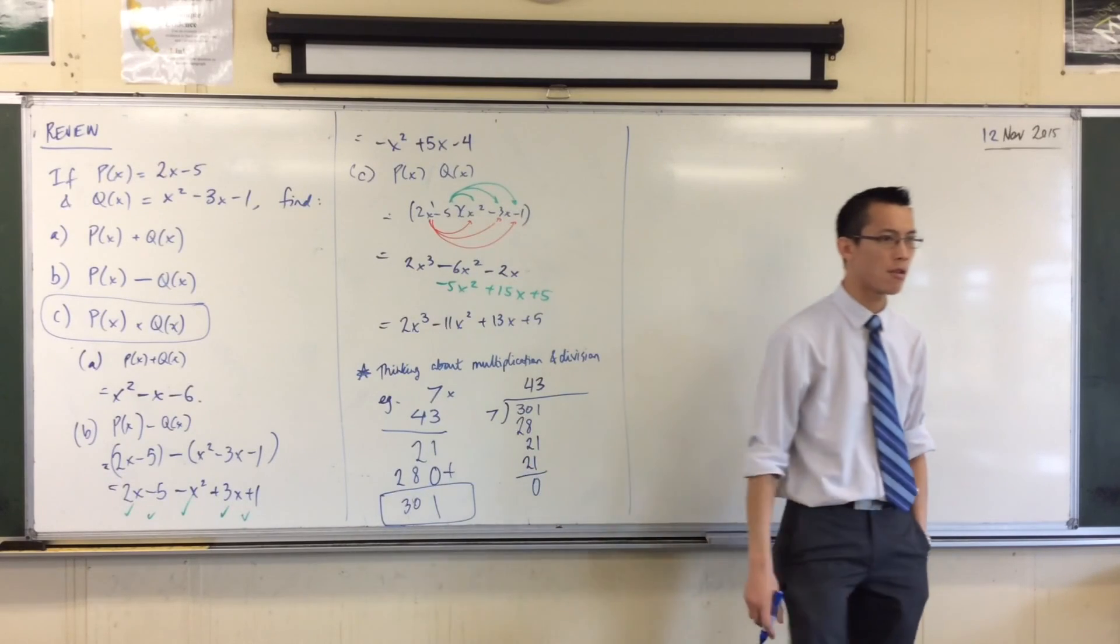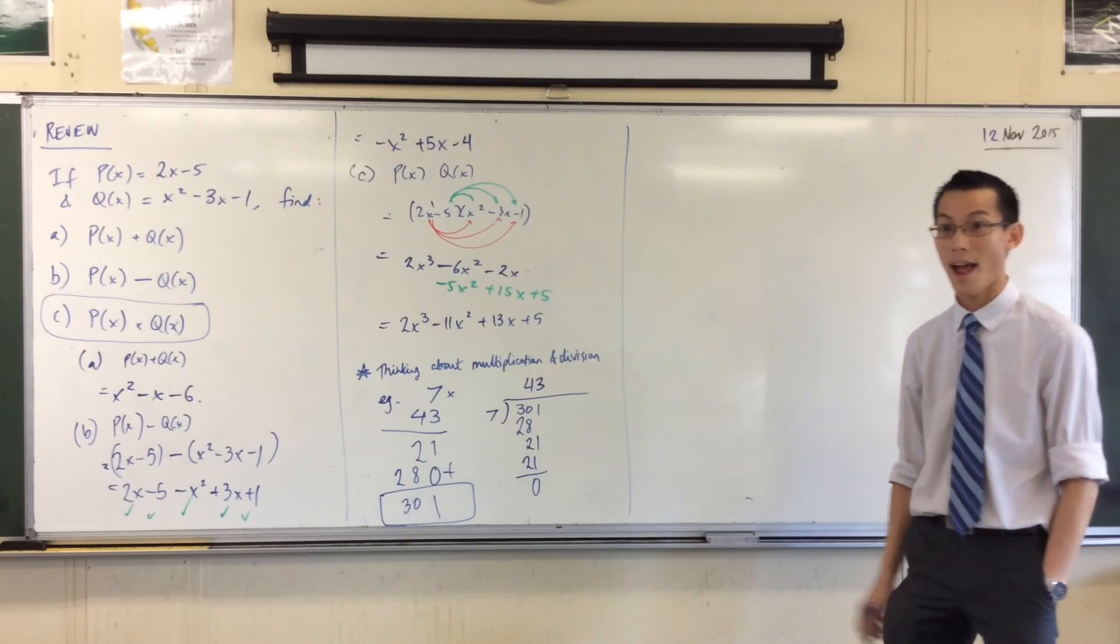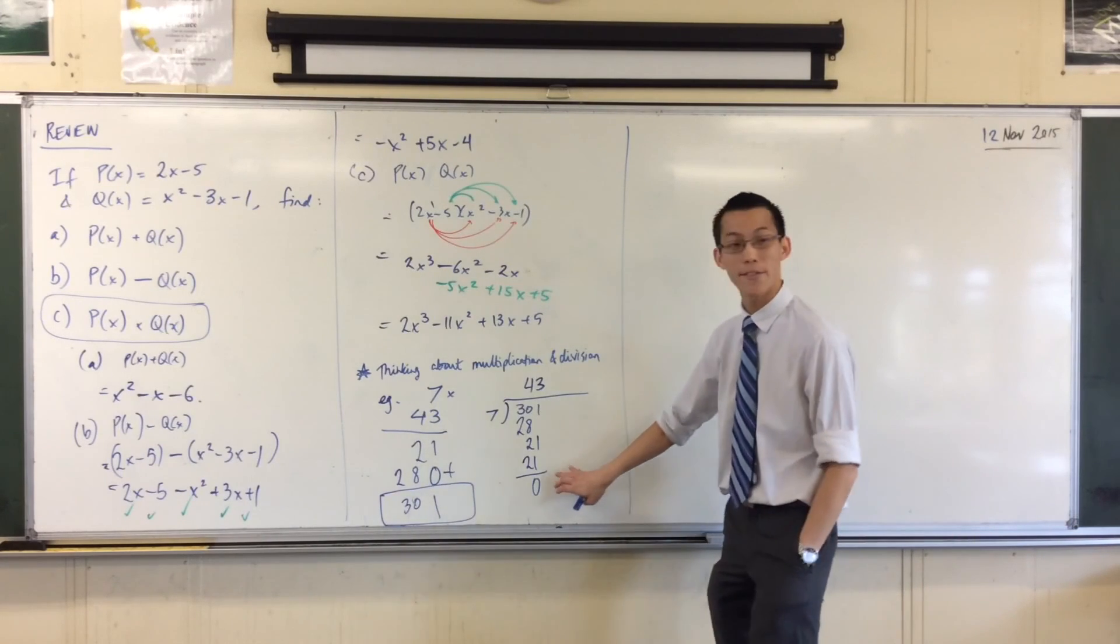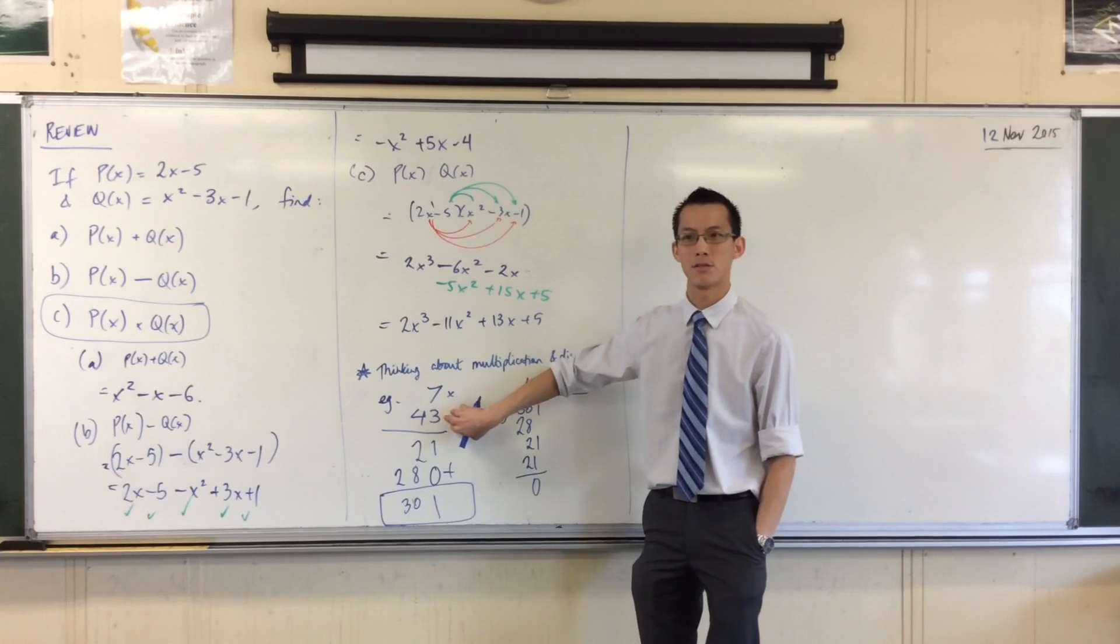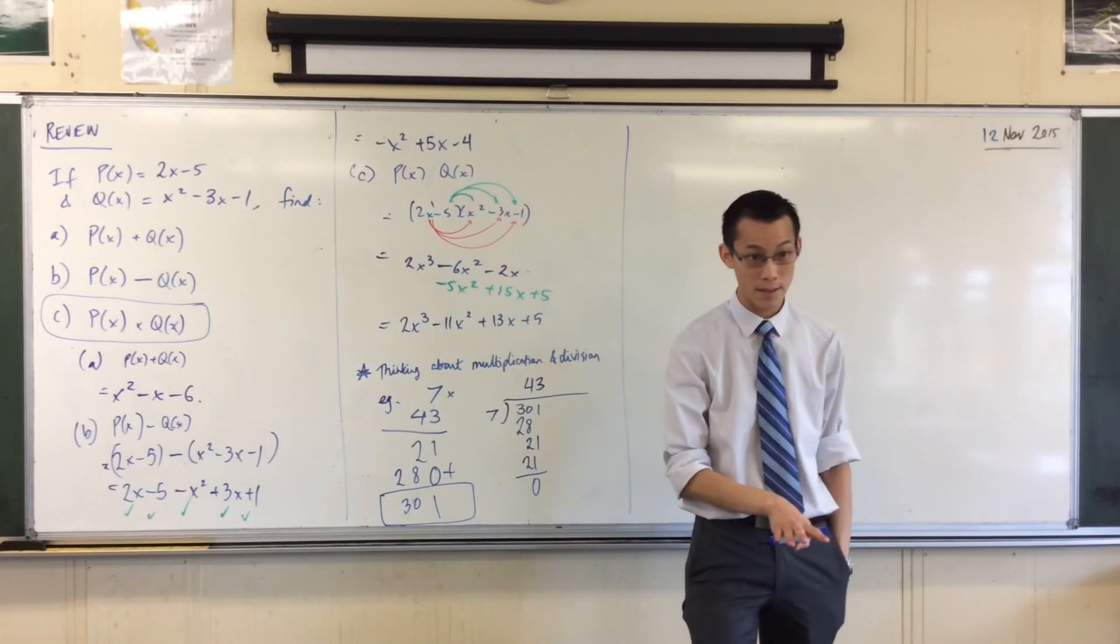Remember, I went 4 by 7 gives me 28. So, now at this stage, I would usually go 3 by 7 gives me 21. And there's a 0 here. What's that 0 about? The 0 is important. The remainder. It's the remainder. Very good. It's what's left over when I divide, but there isn't a remainder for this, because it evenly divides. Does that make sense?